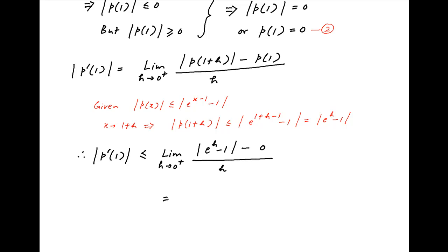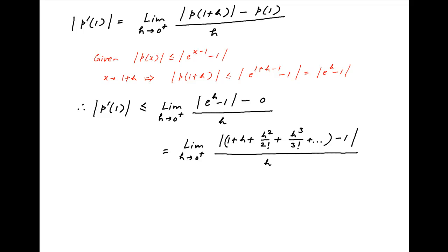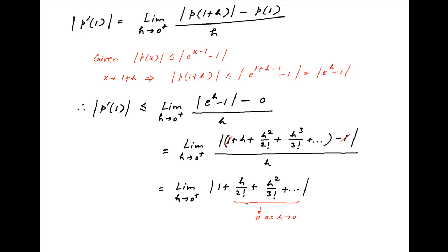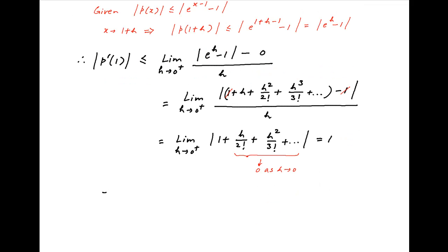The right-hand side equals the limit as h tends to 0 from the positive side of |e^h - 1| divided by h. Expanding e^h as 1 plus h plus h²/2! plus h³/3! plus and so on, the 1 cancels in the numerator and h cancels across numerator and denominator. This gives the limit as h tends to 0 from the positive side of |1 plus h/2! plus h²/3! plus and so on|. All terms involving h tend to zero, so the value of this limit is equal to 1. Therefore, |p'(1)| ≤ 1.